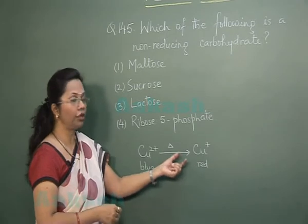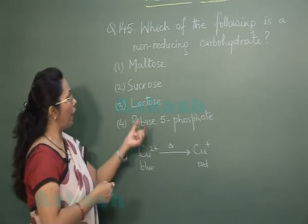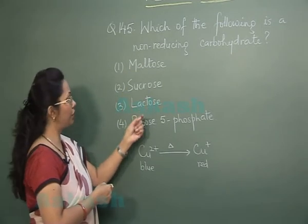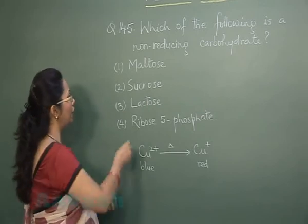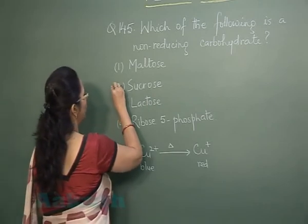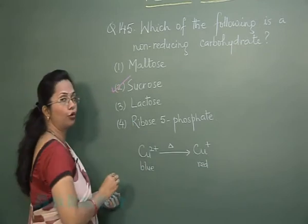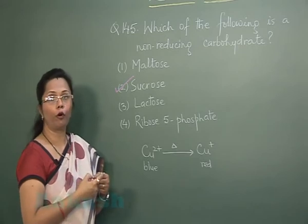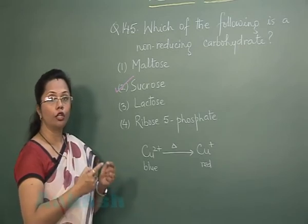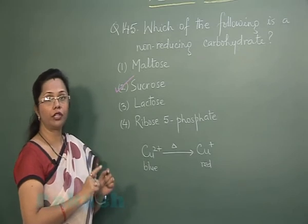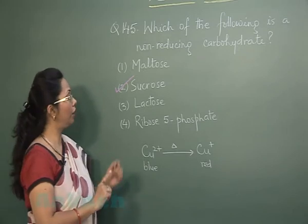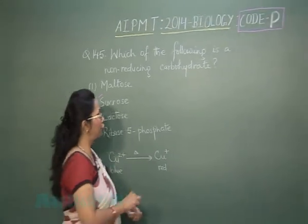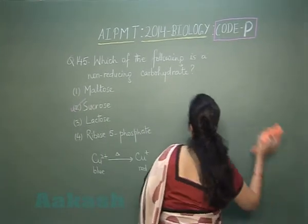A sugar able to give this reaction is called a reducing sugar. Maltose, lactose, and ribose-5-phosphate are reducing sugars, but sucrose is not. In sucrose, the glycosidic linkage is formed between the aldehyde group of glucose and the ketonic group of fructose, so both functional groups are engaged in forming the glycosidic bond — that is why sucrose is a non-reducing sugar.